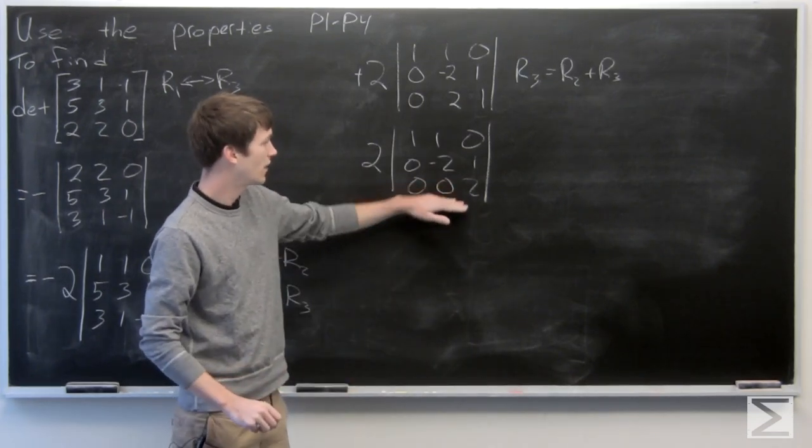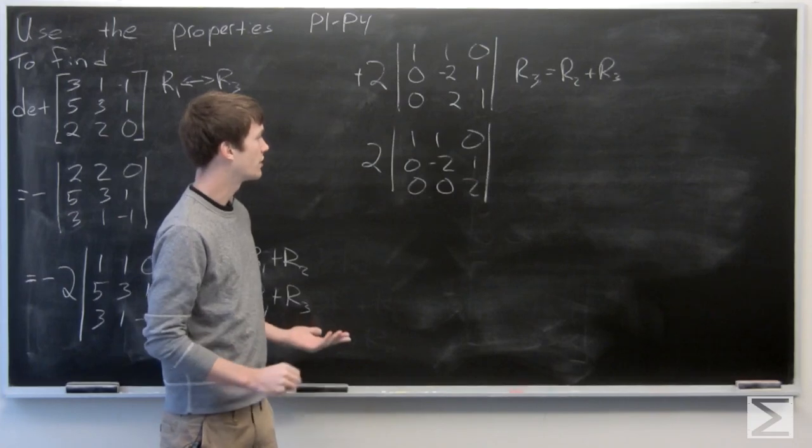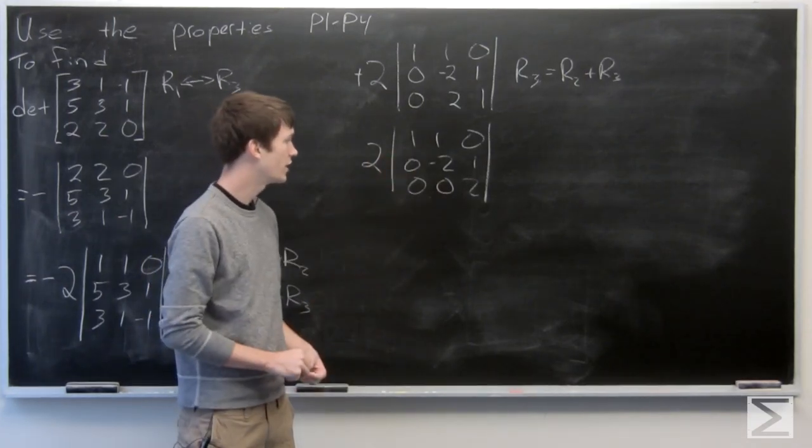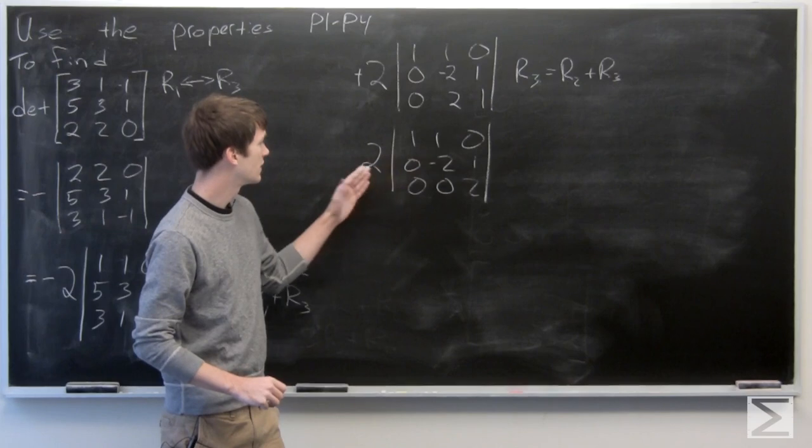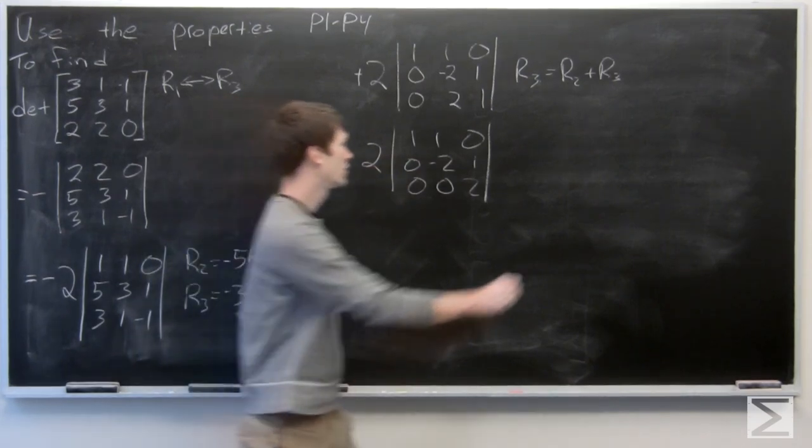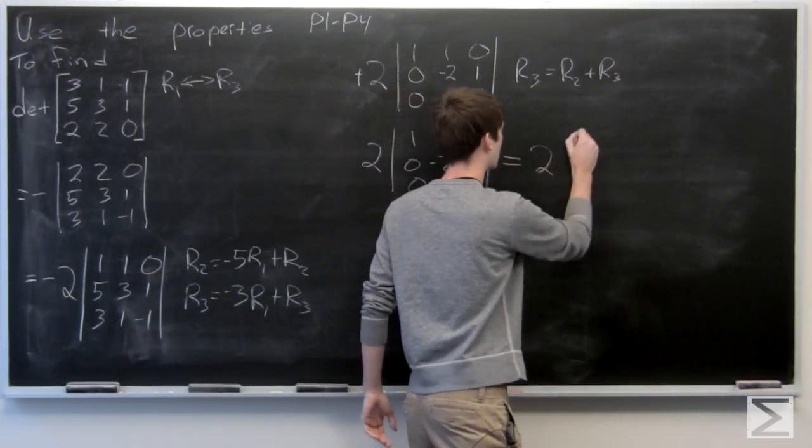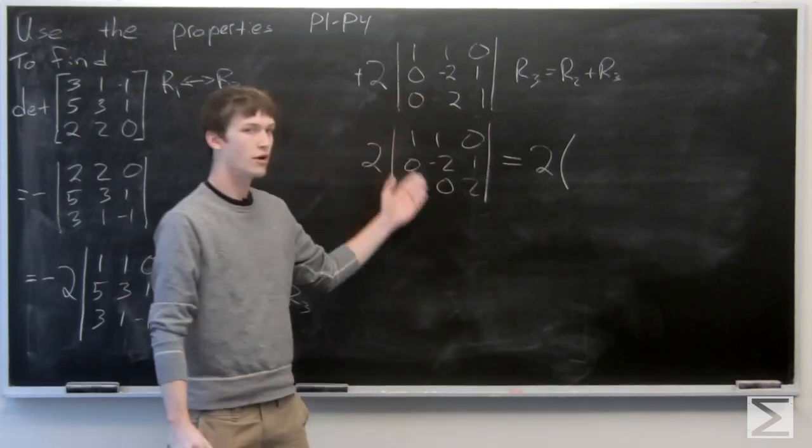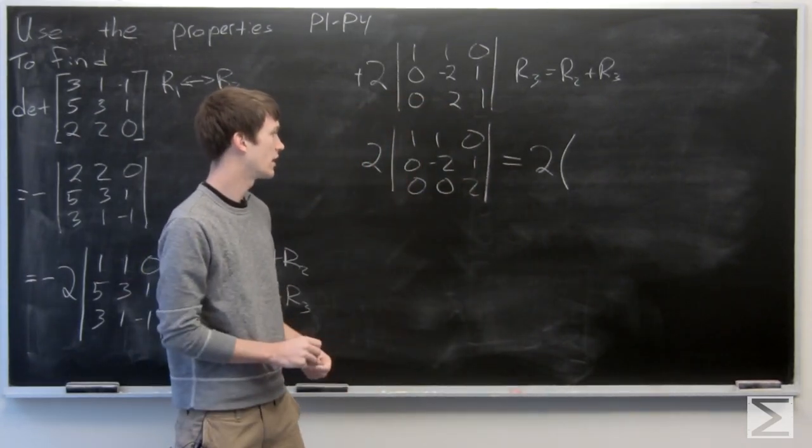And then we know that by properties of our determinant, since we have a triangular matrix, our determinant is equal to 2 times the product of the values along the diagonal.